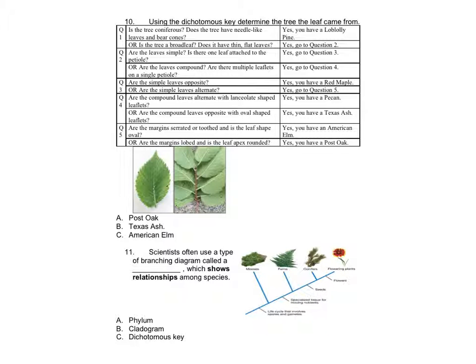A: Post Oak, B: Texas Ash, C: American Elm. Number 11: Scientists often use a type of branching diagram called a what, which shows the relationship among species? A: Phylum, B: Cladogram, C: Dichotomous key.